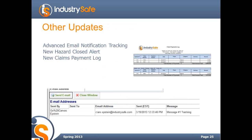There are also some other updates to the software. One is advanced email notification tracking for emails that you send within Industry Safe — not the automatic emails, but the ones where you actually hit the send email button. There's now more tracking on the message, the date and time, and any message you added. There's also a new email alert when you close a hazard — the person who reported it gets an automatic email notification. For folks using the claims module, there's now a claims payment log as well.